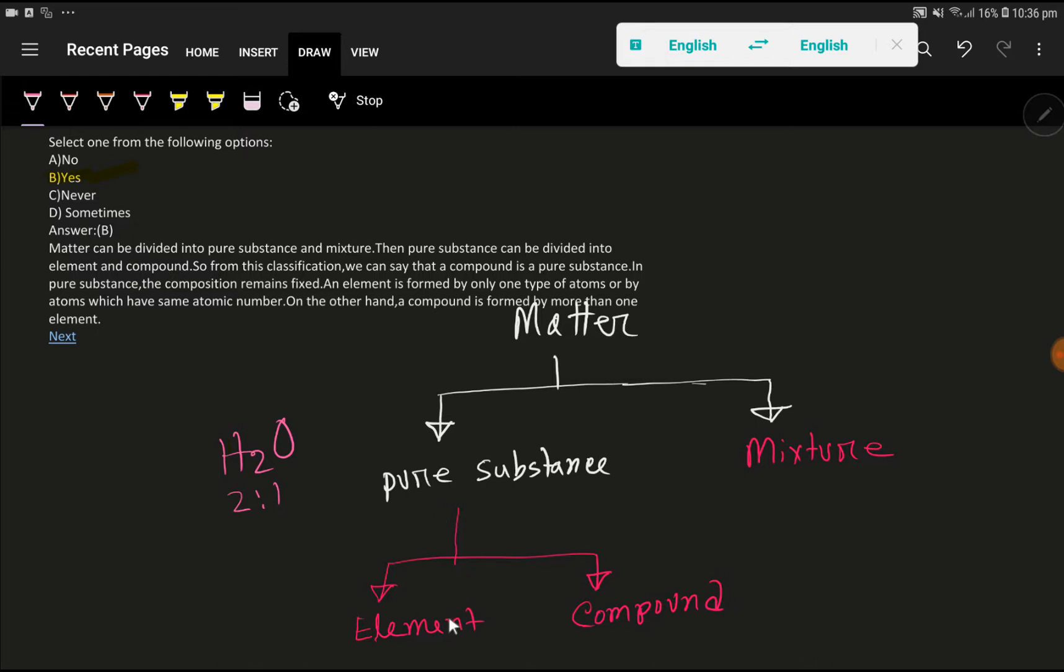The pure substance divides into element and compound. Pure substance means the composition remains fixed. Look, in water we are getting 2 to 1, that is hydrogen 2 and oxygen 1. In every water molecule we get this ratio.